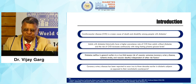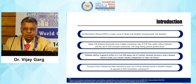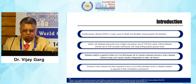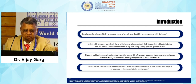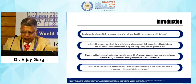As you all know, cardiovascular disease is a major cause of death and disability among people with diabetes. Premature disease has been reported to occur two to three decades earlier in diabetic subjects as opposed to non-diabetic patients. Diabetes mellitus confers a two-fold excess risk of vascular outcome — whether cardiovascular, ischemic, or vascular death — independent of other risk factors.